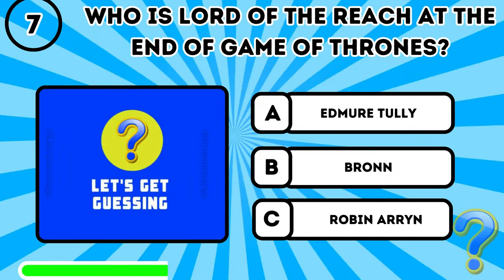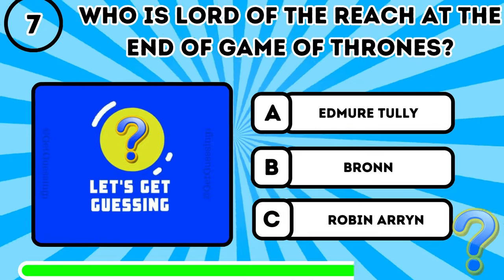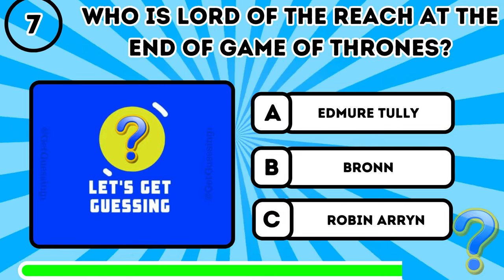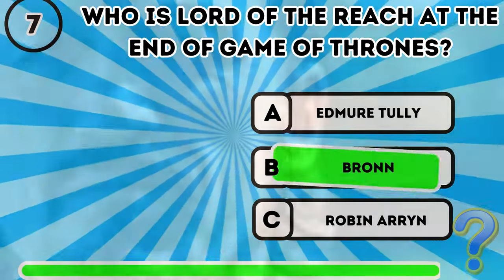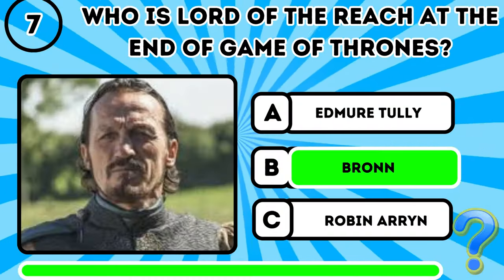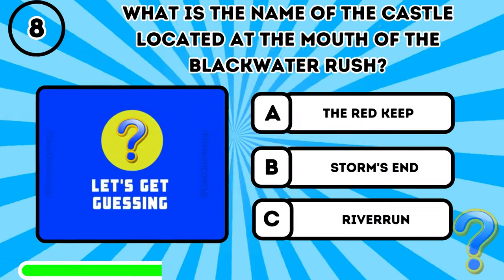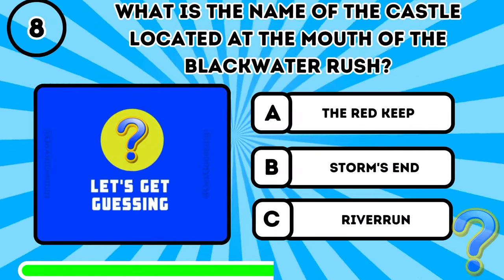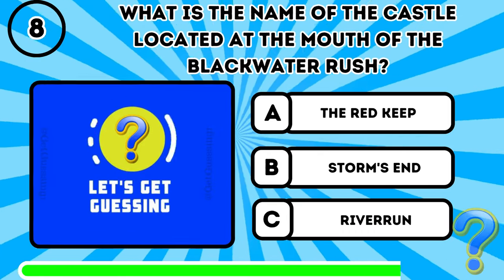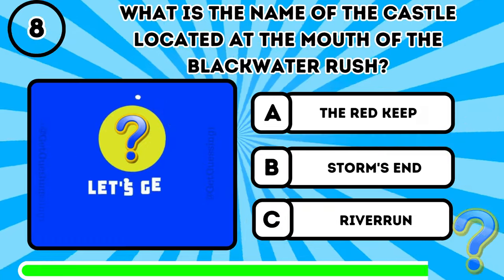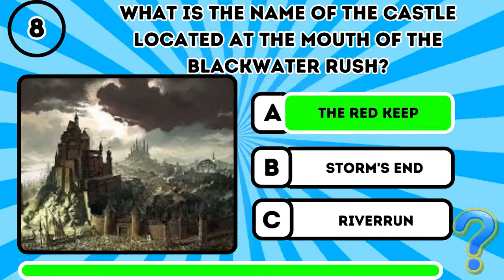Question 7: Who is Lord of the Reach at the end of Game of Thrones? The answer is B, Bronn. Question 8: What is the name of the castle located at the mouth of the Blackwater Rush? The answer is A, the Red Keep.